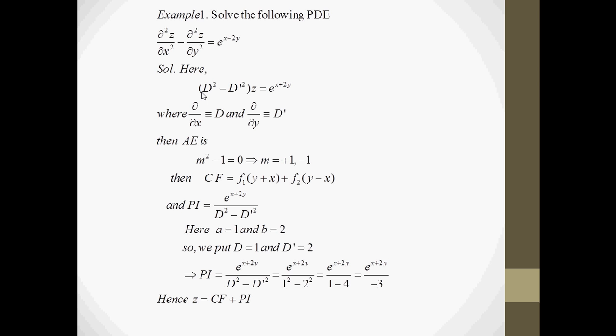The particular integral is e to the power x plus 2y upon d² minus d'². Here the coefficient of x is 1, so a equals 1, and the coefficient of y is 2, so b equals 2. We put d equal to 1 and d' equal to 2 in the denominator: e to the power x plus 2y upon 1² minus 2² equals e to the power x plus 2y upon 1 minus 4, which equals e to the power x plus 2y upon minus 3. The total solution is z equals complementary function plus particular integral.